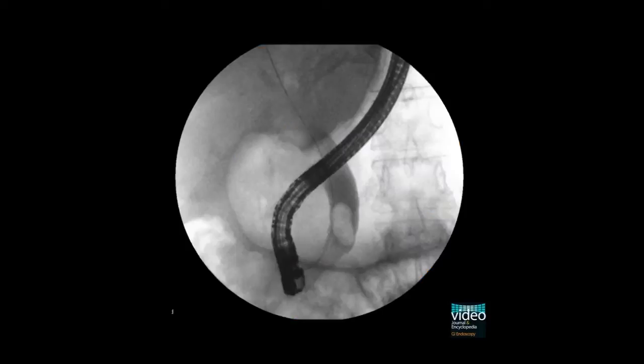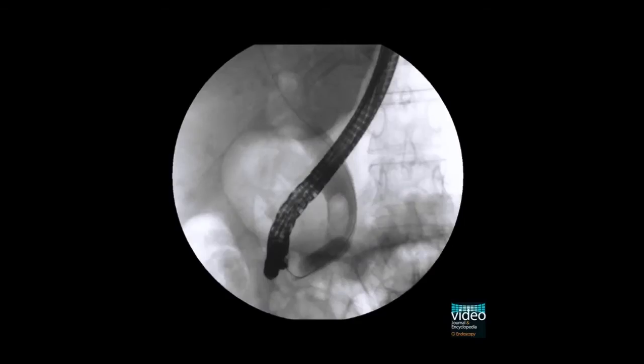The sphincterotome is withdrawn, but the guide wire left in place. A dilation balloon is inserted in the distal part of the common bile duct. Inflation is started under fluoroscopy control in order to verify that the stone is not between the wall of the bile duct and the balloon. This is of utmost importance to prevent perforation during dilation.